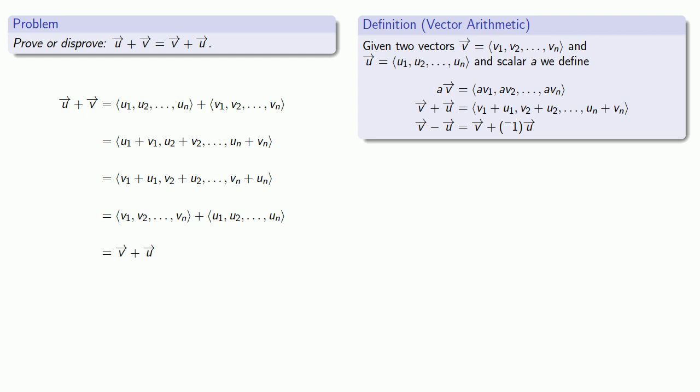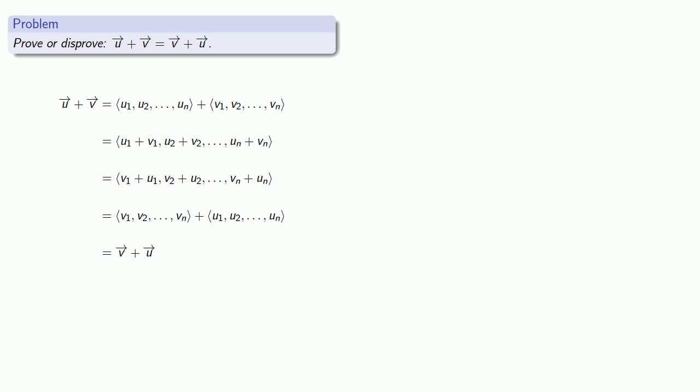And now we have that final step. Can we bridge this gap that takes us from where we left off, coming from u plus v, and where we got to, starting at v plus u? And our vector components look very similar, and the only thing that we have to worry about is whether or not u1 plus v1 is the same as v1 plus u1, whether u2 plus v2 is the same as v2 plus u2.